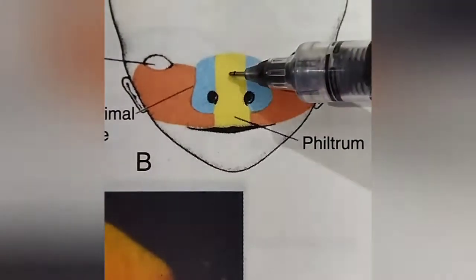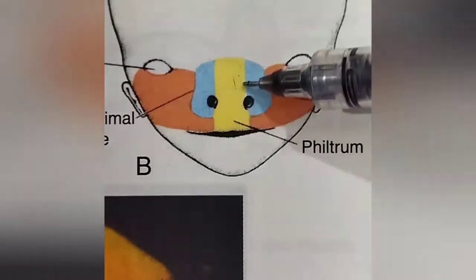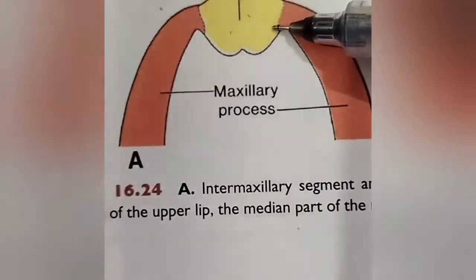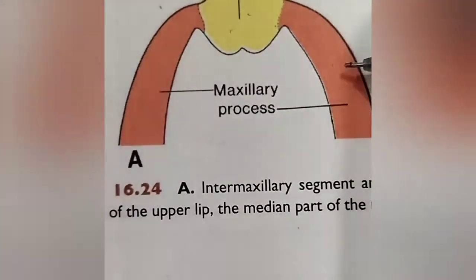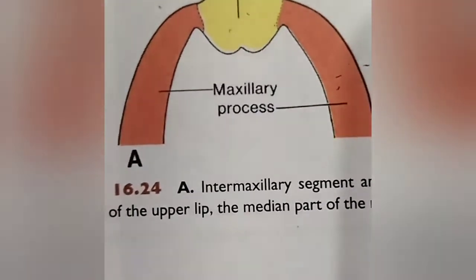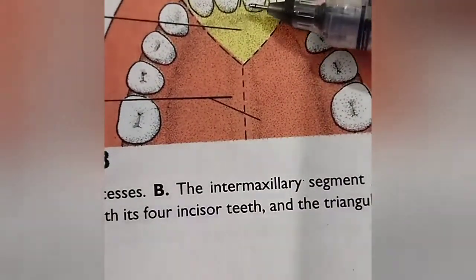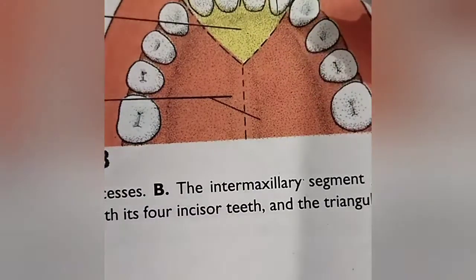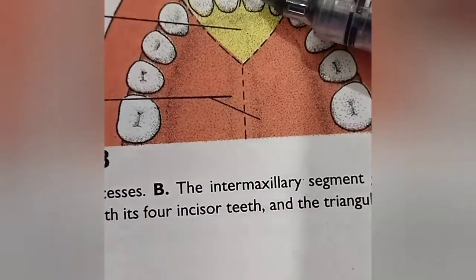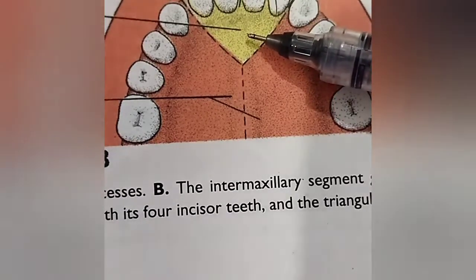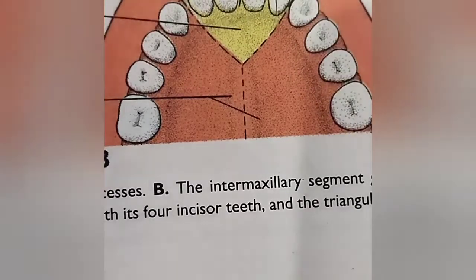From superficially it looks like this, from externally it looks like this, and internally it looks like this. It is situated in between the two maxillary prominences. From this inter maxillary segment, the following structures are developed: the philtrum of the lip, the four incisor teeth, and the primary palate.